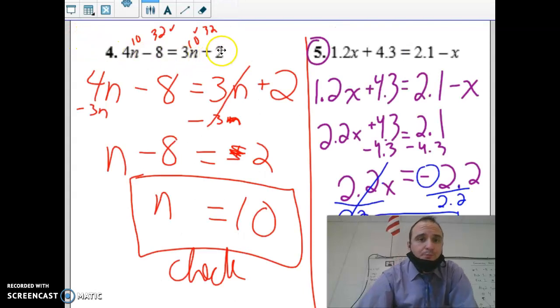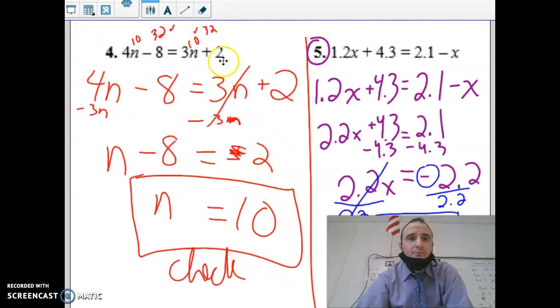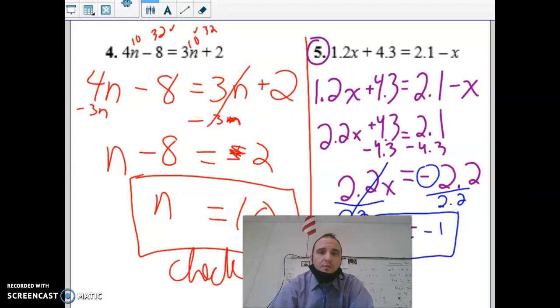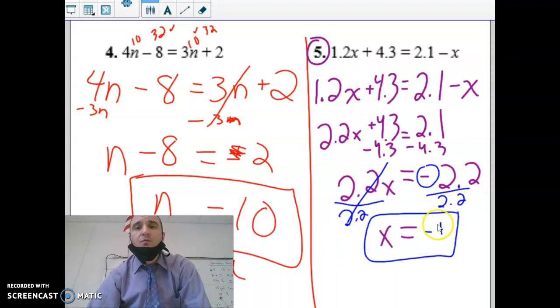Number 4, n equals 10. And number 5, when you're moving the decimals, we actually get negative 1.